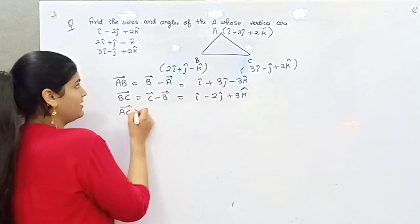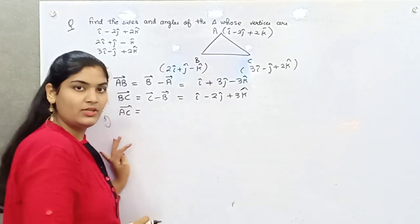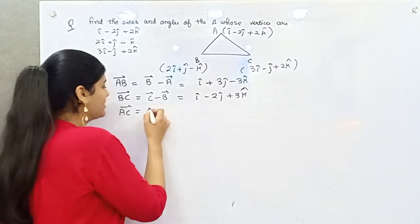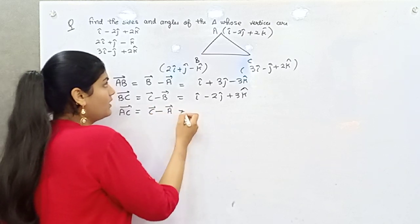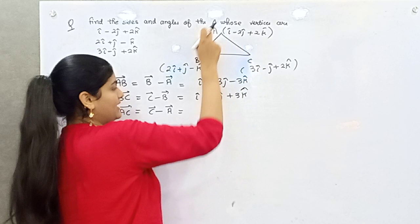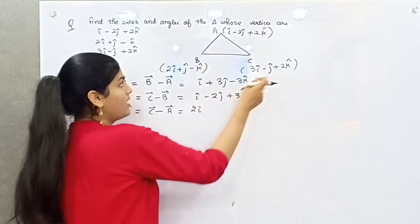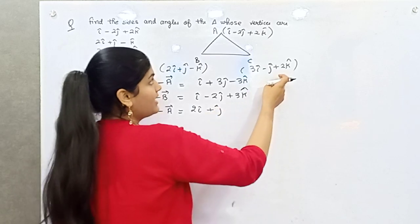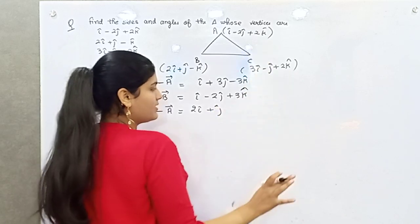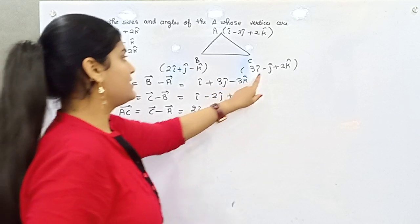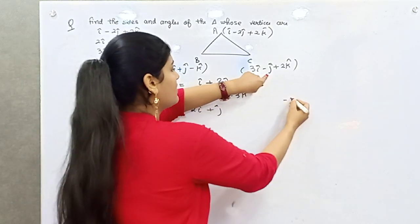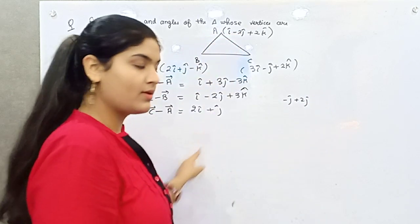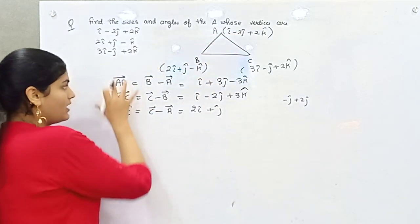Similarly, you can find out the third side, which is AC. For AC, final minus initial is C minus A. So C is 3i; 3i minus i = 2i. For j: minus j minus (minus 2j) = j... actually minus j plus 2j = j. And for k: 2k minus 2k = 0. So AC = 2i + j.